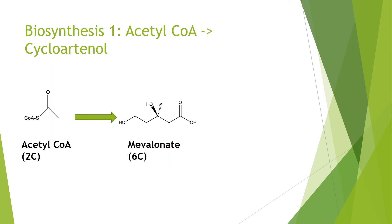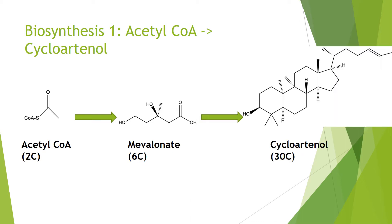The basic building block of all brassinosteroids is acetyl-CoA, a 2-carbon molecule, which can then be condensed with other acetyl-CoAs to form mevalonate. Several mevalonates can then be condensed through intermediates such as squalene to cycloartenol, a 30-carbon molecule.